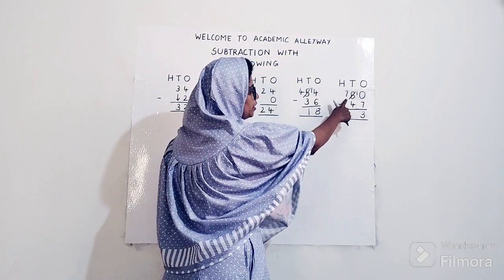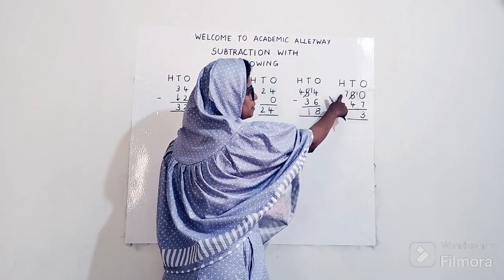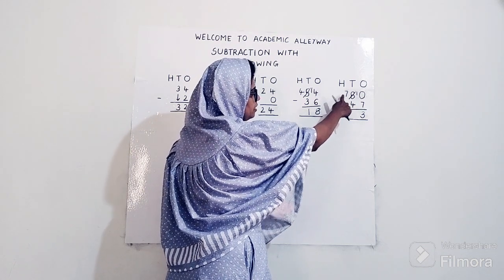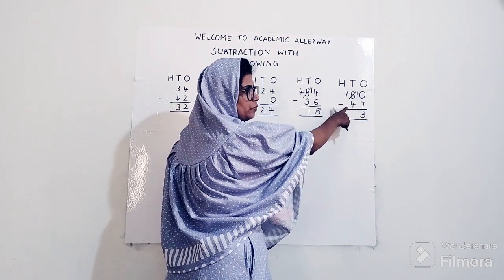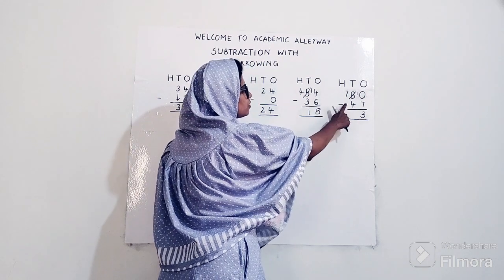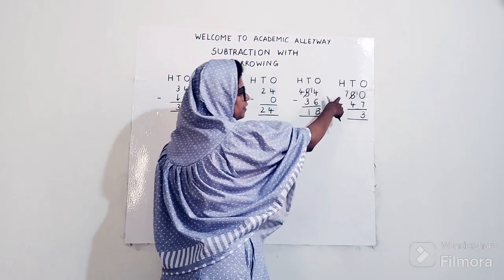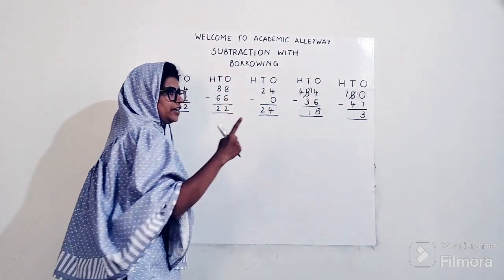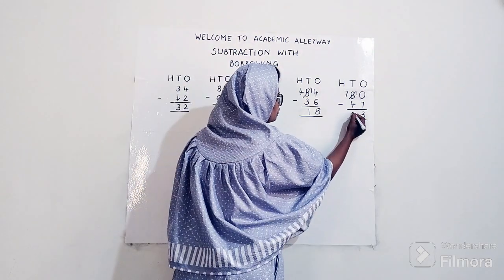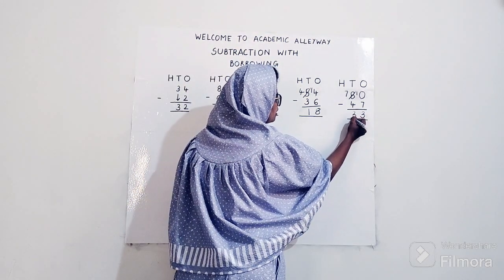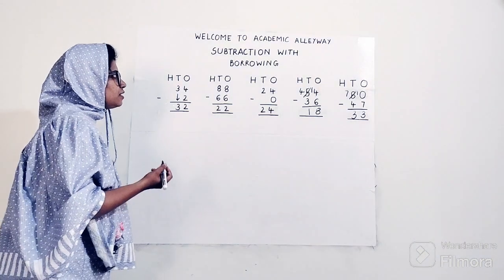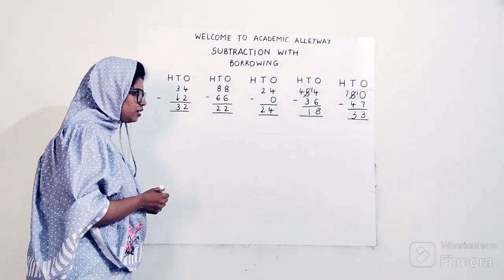Now my new tens number is 7, not 8. So 7 minus 4: count after 4 till 7 — 5, 6, 7 — answer is 3. So my final answer for 80 minus 47 is 33. This is the concept of subtraction with borrowing.